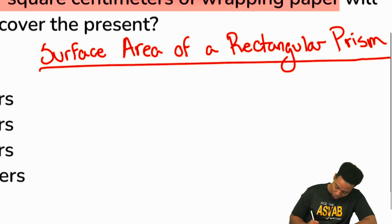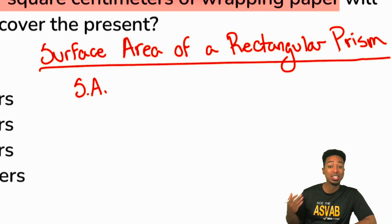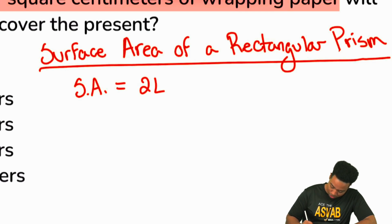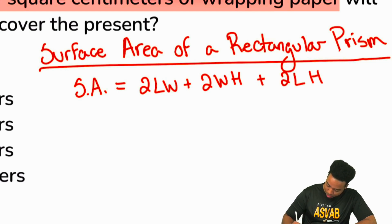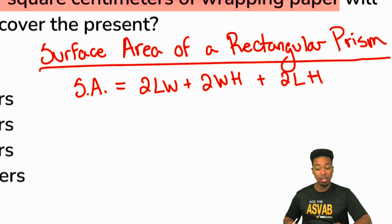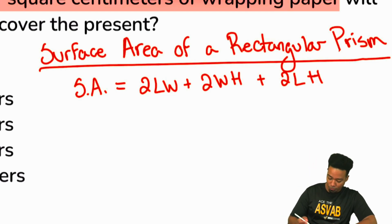Here it is. This is the surface area of a rectangular prism is going to be 2 multiplied by the length times width plus 2 times the width times height plus 2 times the length times the height. That seems like a bunch of jargon, right? Seems like a bunch of babbling, but there's actually some rhyme or reason to this formula. There is.